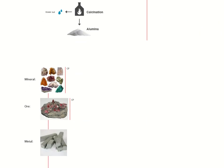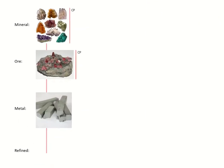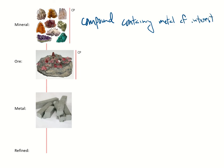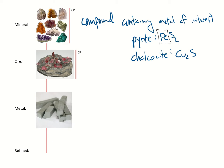First we need a couple of terms. We can define a mineral as a compound containing the metal of interest. You've already encountered a couple of different minerals in this class. For instance, we've seen pyrite with a formula of FeS₂ and we've seen chalcosite with a formula of Cu₂S. In pyrite, iron is the metal of interest, and in chalcosite, copper is the metal of interest.